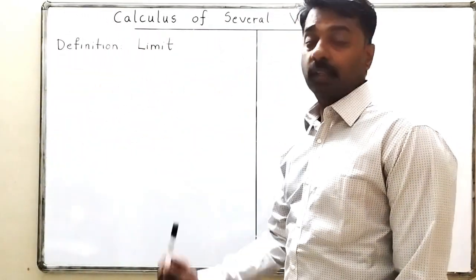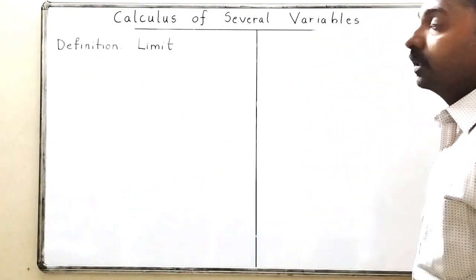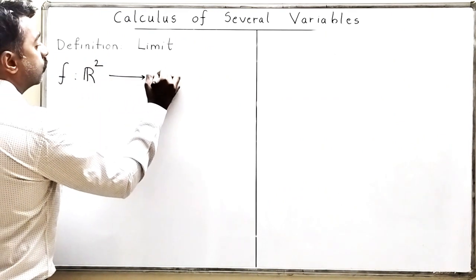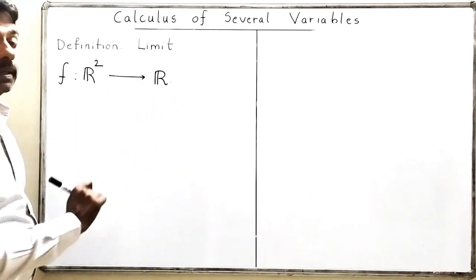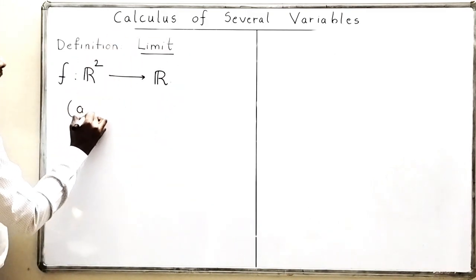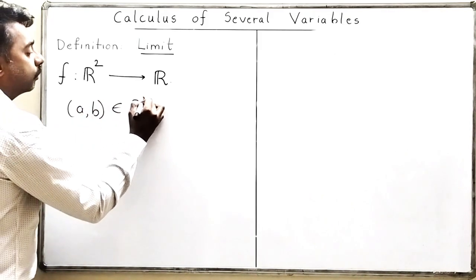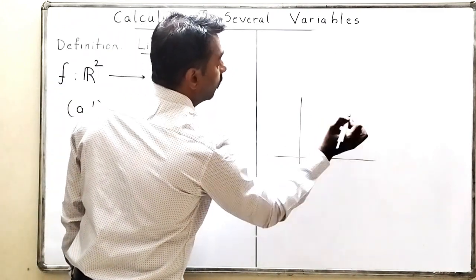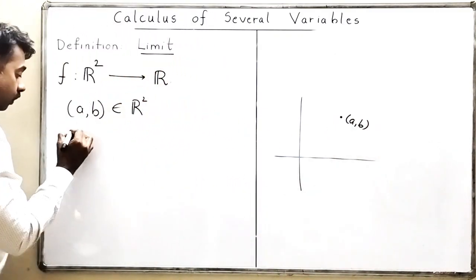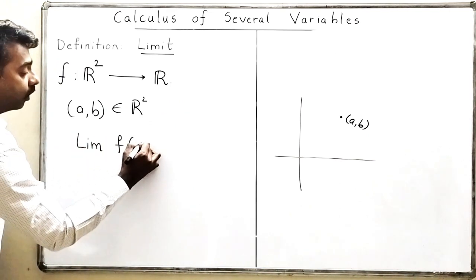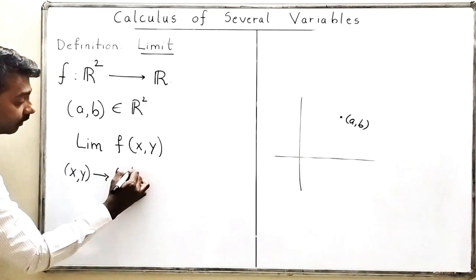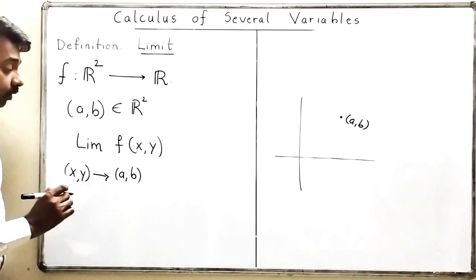In this video we are going to discuss the limit of functions. We will take a function from R² to R, which is a function of two variables and a real-valued function as explained in the previous lecture. We will define the limit of this function. So I will take a point (a, b) in R² and define the limit of f(x, y) as (x, y) tends to (a, b).